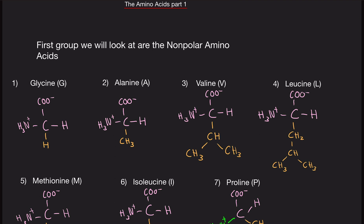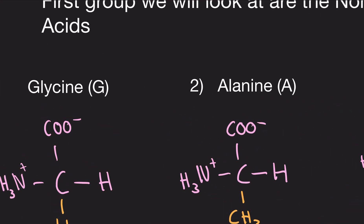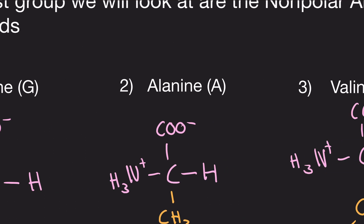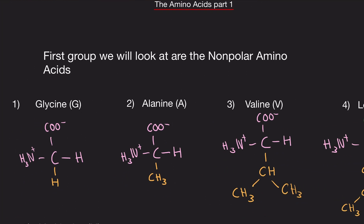Every amino acid, all 20 of them, have an abbreviation to them. They're denoted by a single letter. For example, glycine is G. Alanine is A. They're not always the first letter of the word, of the name, rather.